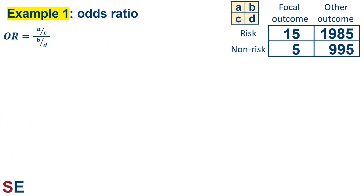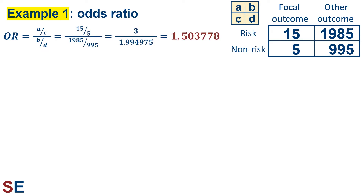Next up is the odds ratio, which is calculated using this equation. This equation is less straightforward to understand than the relative risk — it calculates the ratios of the risk factor in the two outcome groups and then compares them. While the ratio of the risks in the focal group is 3, the ratio in the other outcome group is a bit different from exactly 2, so we won't get a value of 1.5 for the odds ratio. Plugging in the values gives us 15 divided by 5 in the numerator and 1,985 divided by 995 in the denominator, for an odds ratio value of 1.503778.